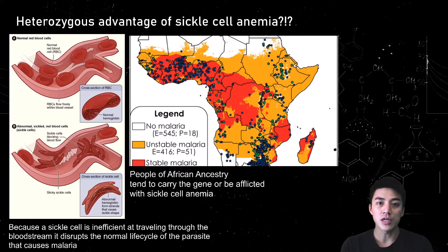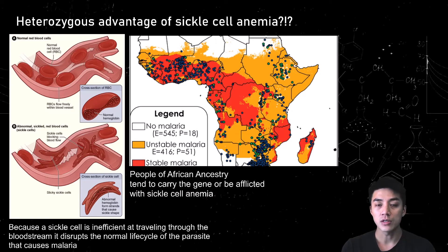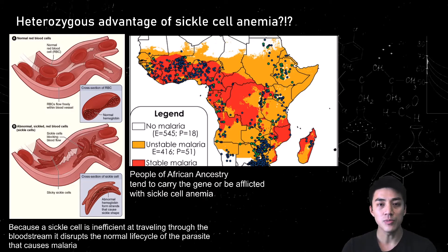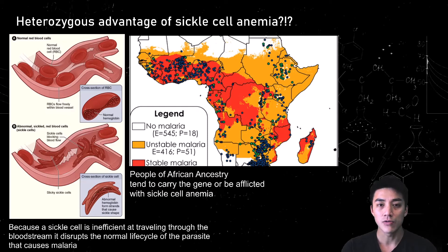There is something known as the heterozygous advantage in certain traits and diseases, and this is seen in sickle cell anemia. It's prevalent in people with African ancestry because sickle cell causes deformity in the red blood cell, making it inefficient at traveling through the bloodstream. In Africa where malaria is a huge problem, people with sickle cell anemia tend to survive this disease because the sickle cell shape disrupts the normal life cycle of the parasites that depend on blood cells to reproduce. Sickle cell actually slows down this process.